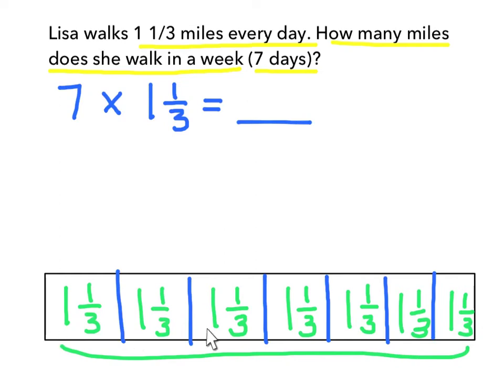I have seven ones, so I'm going to write that as seven times one equals seven. Seven groups of one is seven — we could have also added one seven times and gotten seven. The next thing I need to do is add up or multiply my fractions, so I have seven groups of one third — seven times one third.